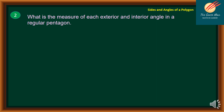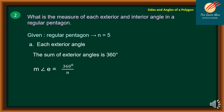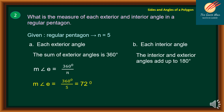Next question: what is the measure of each exterior and interior angle in a regular pentagon? A pentagon has N equal to 5. For the exterior angle: the sum of exterior angles is 360, so each exterior angle equals 360 divided by 5, which is 72 degrees. Since interior and exterior angles are supplementary, the interior angle equals 180 minus 72, which is 108 degrees.